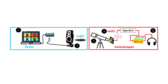We present the Glowworm Attack, an innovative method aimed at recovering speech from virtual meetings. By exploiting imperceptible changes in the intensity of a device's power indicator LED, which are caused by the changes in the device's power consumption, Glowworm is capable of recovering speech.